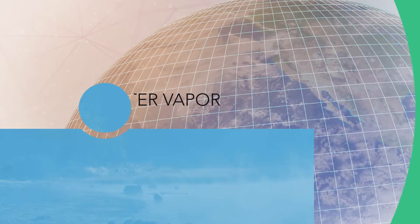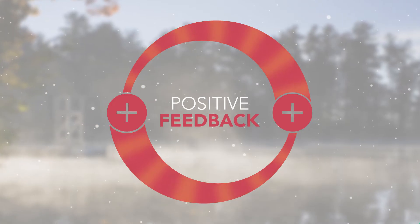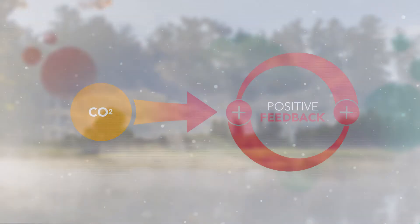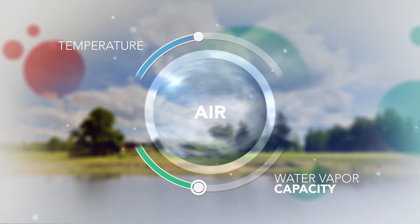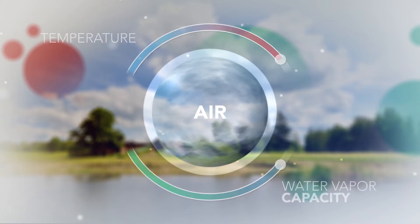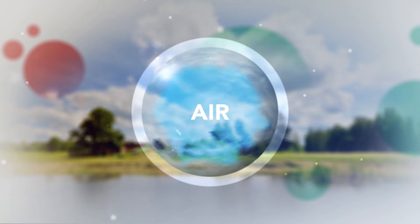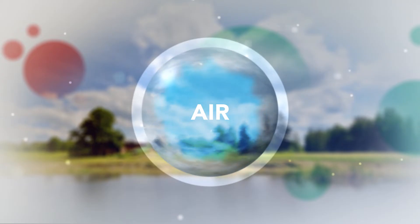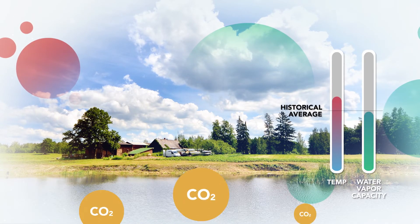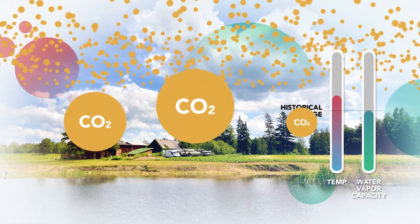The climate system contains several well-understood feedbacks that are important in understanding climate change. The first feedback I'll examine is the water vapor feedback. This is a positive feedback, so it acts to further increase temperatures caused by the addition of greenhouse gases like carbon dioxide. A basic physical property of the air is that as temperature increases, more water vapor can exist in the air. We begin with increased temperature due to the addition of carbon dioxide to the atmosphere, as we've already discussed.